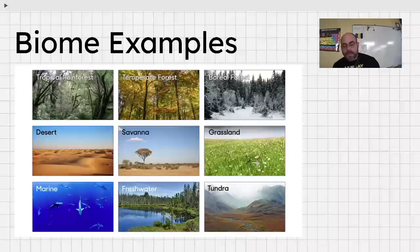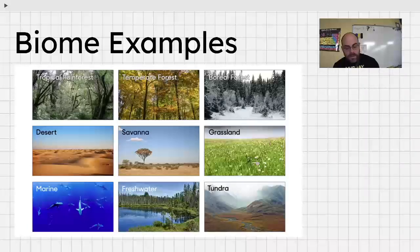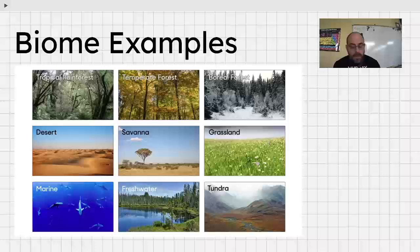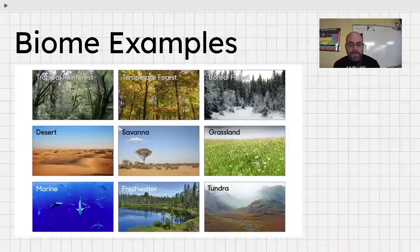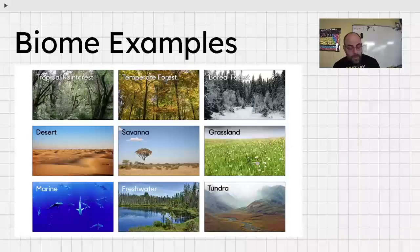Tundra has to do with very cold, frozen ground for some parts of the year. Low precipitation as well. Usually smaller types of plants like mosses and lichens. No trees, typically, in the tundra as well.